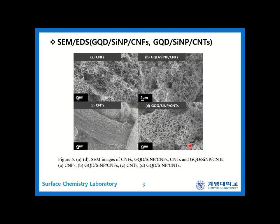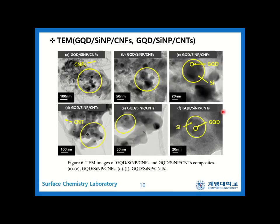In figure 5, silicon particles are surrounded by carbon nanomaterials; however, we cannot observe OH-GQDs due to their small size. So we conducted TEM analysis, where we can observe OH-GQDs in the composite. In figures 6C and 6F, there are GQDs visible on the surface of the silicon particles.